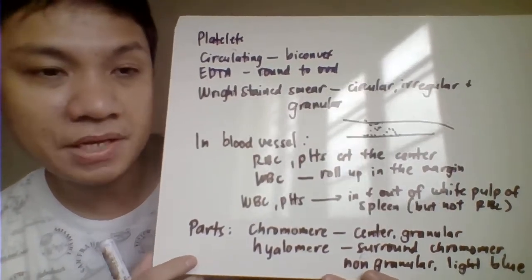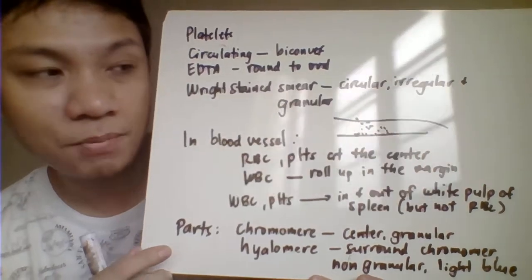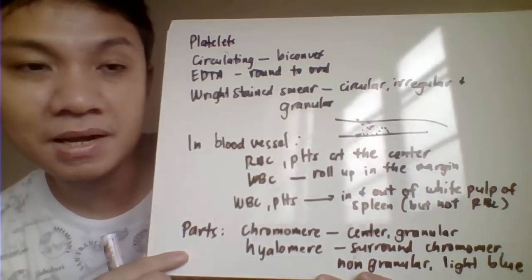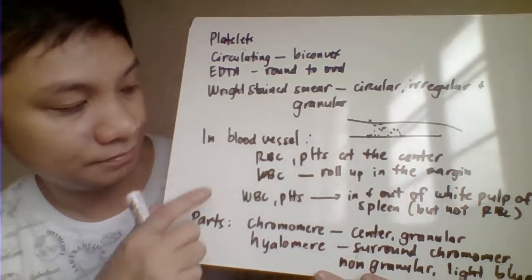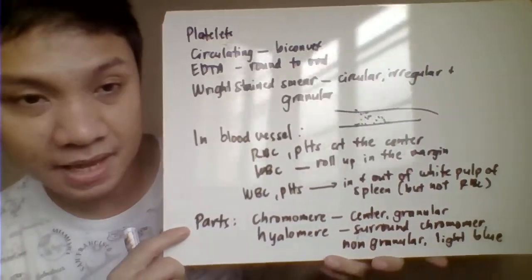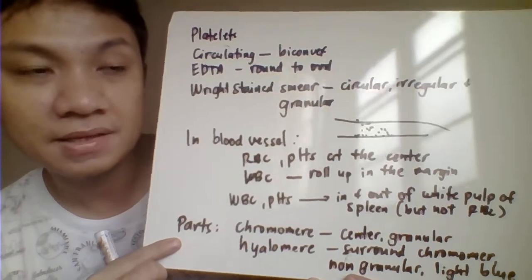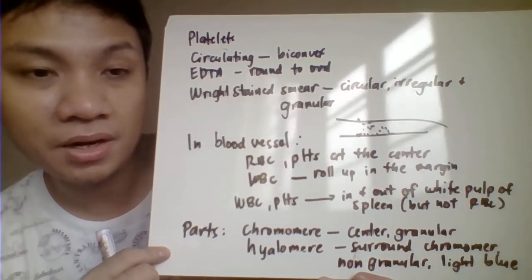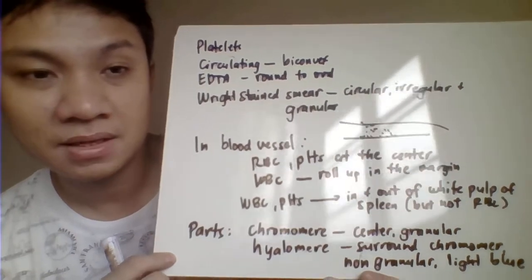As blood enters the spleen, your platelets and WBCs are able to enter in and out of the white pulp of the spleen, whereas RBCs are found in the red pulp. Regarding parts of a platelet: the chromomer is the central, granular portion, while the hyalomer surrounds it — it is agranular and appears light blue when stained with Wright stain.